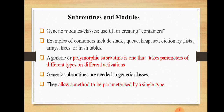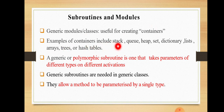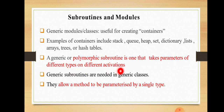Next, we look at subroutines and modules. Generic modules or classes are used for creating containers. Examples of containers include stack, queue, heap, set, dictionary, list, array, tree, or hash table. A generic or polymorphic subroutine takes parameters of different types on different activations. Generic subroutines are needed in generic classes, and they allow a method to be parameterized by a single type.